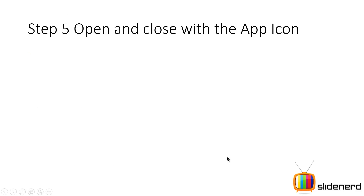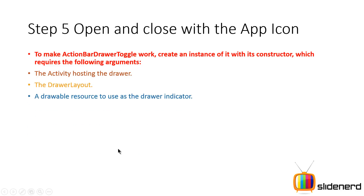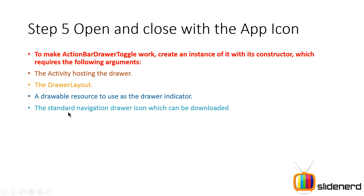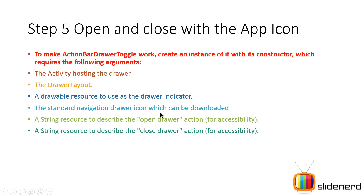So what does the ActionBarDrawerToggle object require? It needs: the activity object that contains the drawer, a DrawerLayout reference, a drawable resource for the three horizontal bars icon, and string resources to describe the opening and closing actions. The strings are purely for accessibility purposes — for example, if a user can't see the screen, a voice assistant will tell them whether the drawer was opened or closed.